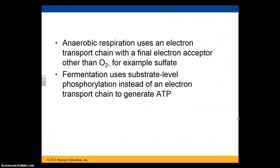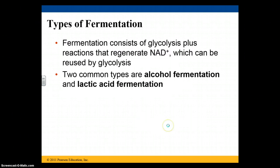Anaerobic respiration uses an electron transport chain, but the final acceptor is not oxygen — sometimes sulfate can be a final electron acceptor. Fermentation is going to use substrate-level phosphorylation instead of an electron transport chain. Substrate-level phosphorylation can generate ATP, just not in the same amount as oxidative phosphorylation. There are two main types of fermentation: alcohol fermentation and lactic acid fermentation.